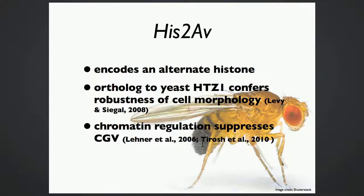The gene we want to perturb is His2AV. This gene is on the third chromosome and encodes an alternate histone. We chose it partly because other lab members have studied the ortholog in yeast, HTZ1, which has been shown to confer robustness in cell morphology against microenvironmental variation. Additionally, studies in nematode worms and yeast have shown that chromatin regulation contributes to the suppression of cryptic genetic variation.